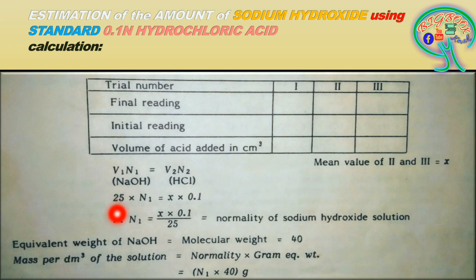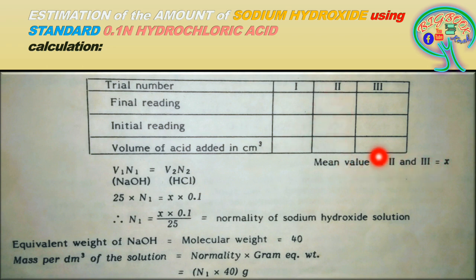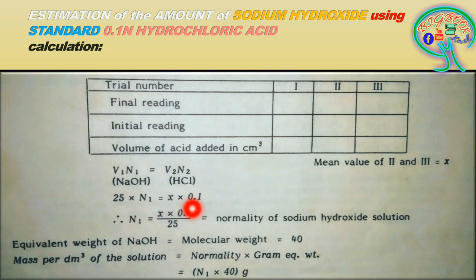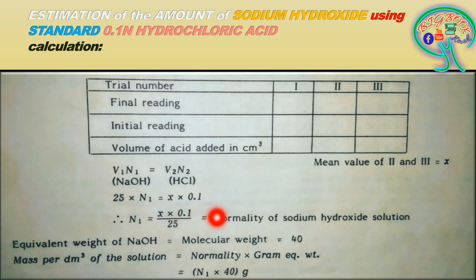The readings are: V₁ is NaOH — we took 25 cm³ of the NaOH solution in the flask — and N₁ is the normality we need to find. X is the burette mean value obtained from the experiment. The normality of HCl is 0.1. So the formula becomes: N₁ = (X × 0.1) / 25.